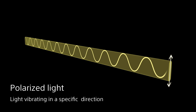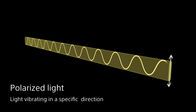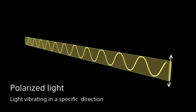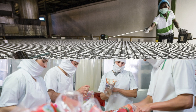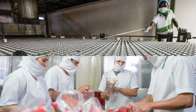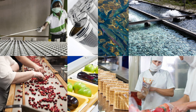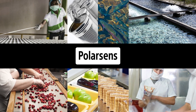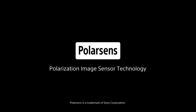On the other hand, light vibrating in a specific direction is called polarised light. Unlike brightness or colour, polarisation can't be detected by conventional image sensors or human eyes. PolarSense is a new image sensor technology for detecting polarised light.